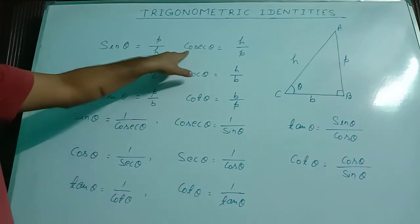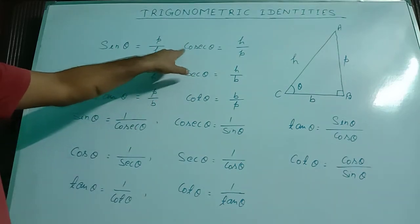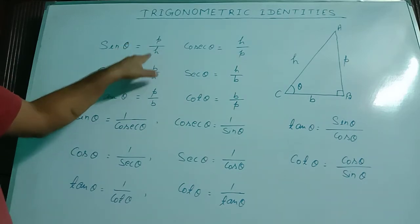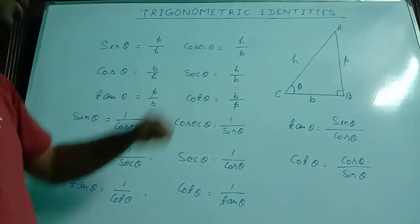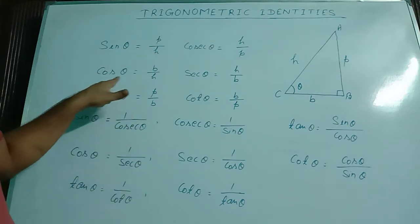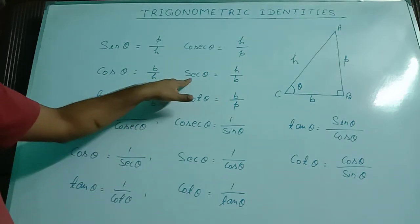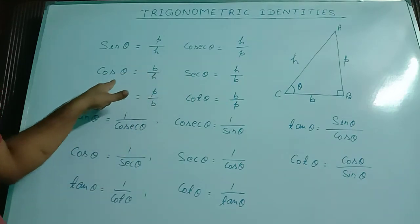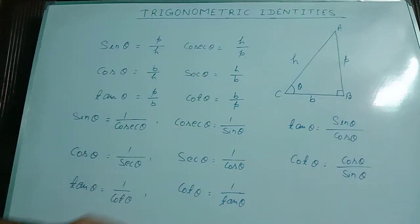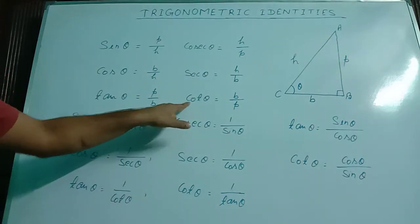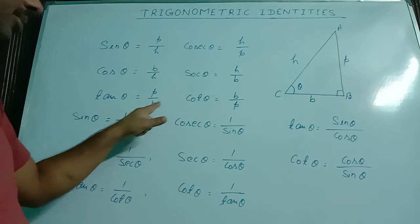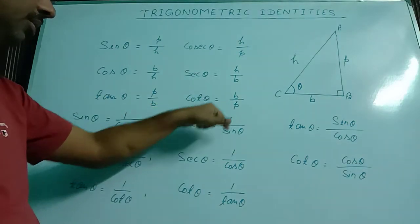Cosec theta is the reciprocal of sin theta. If sin theta equal to P by H, then cosec theta equal to H by P. If cos theta equal to B by H, then sec theta is the reciprocal of cos theta, so sec theta equal to H by B. Similarly, cot theta is the reciprocal of tan theta. If tan theta equal to P by B, then cot theta equal to B by P.